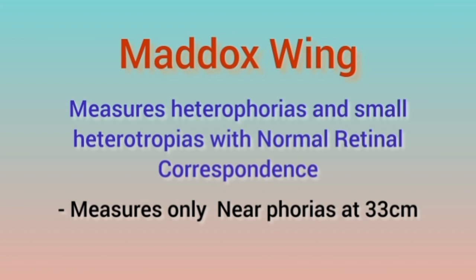Maddox Wing is basically used to measure the heterophorias, different types of phorias, and the amount of small heterotropias that are not manifested. These types of tropias and visible squints are evaluated using Maddox Wing when the patient has normal retinal correspondence and BSV with normal corresponding points achieved. It is only done to measure near phorias, and the measurement distance is 33 cm.